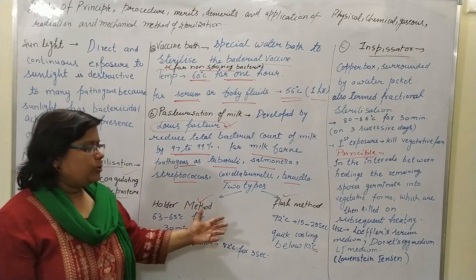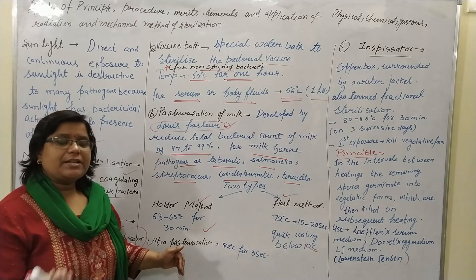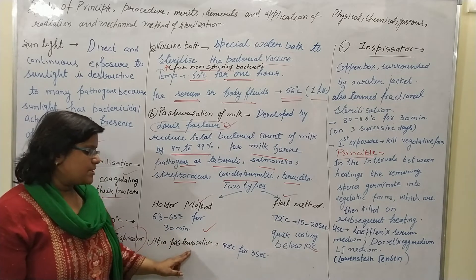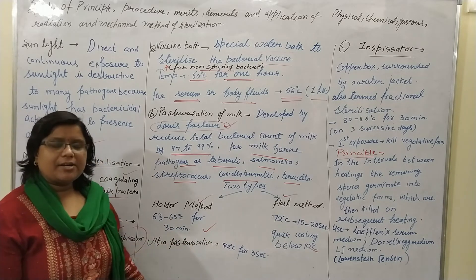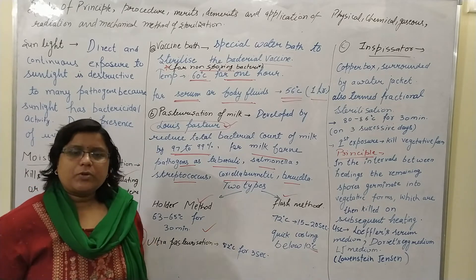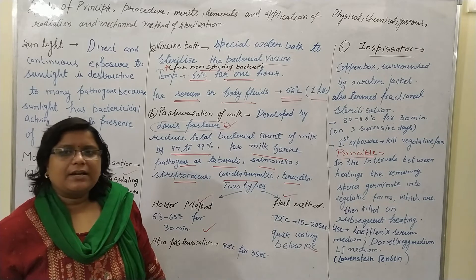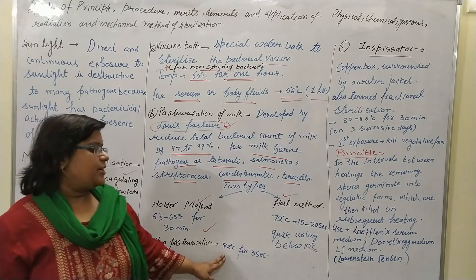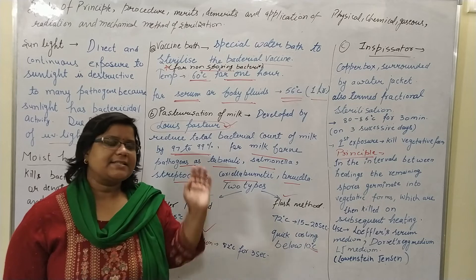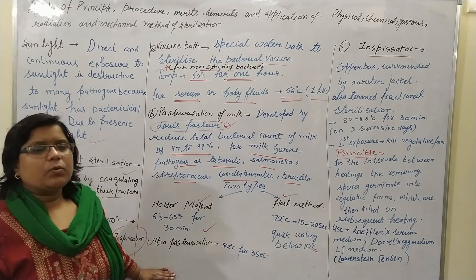Mainly two methods are used in pasteurization, but in some recently published books the ultra-pasteurization method is also discussed, so I have included it in my lecture. In ultra-pasteurization, the temperature range is 82 degrees Celsius for three seconds and then suddenly cooled down.